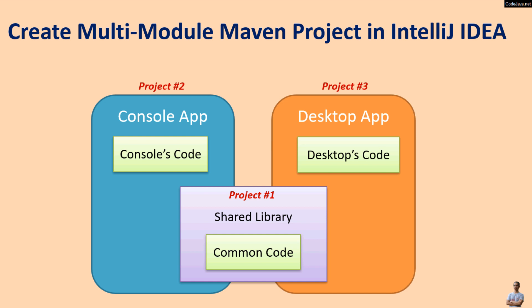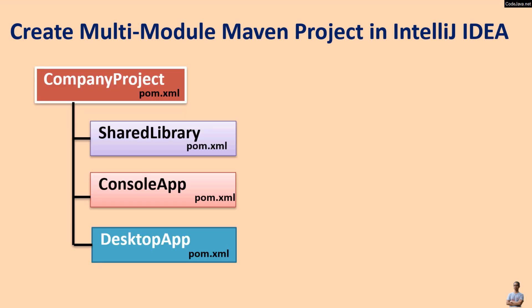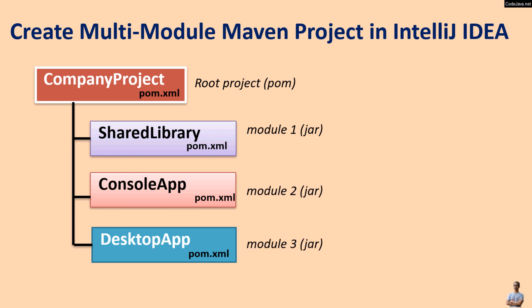Using Maven, we first need to create the root project, then create the first module for the shared library, the second module for the console app, and the third module for the desktop app. Note that the packaging type for the root project is POM, whereas the packaging type of the three modules is JAR.